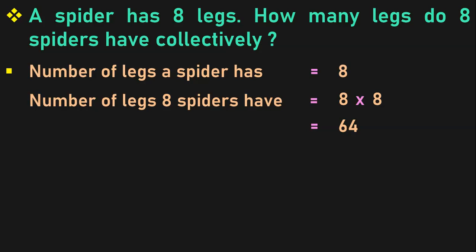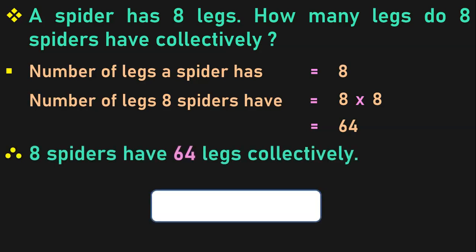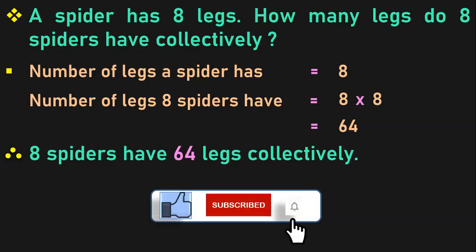Take and write down the answer now. Therefore, 8 spiders have 64 legs collectively. How to write the 7, 8 and 9 tables has been dealt with as a separate topic in a separate video. The link to that video is given below in the description box. You may refer to it.